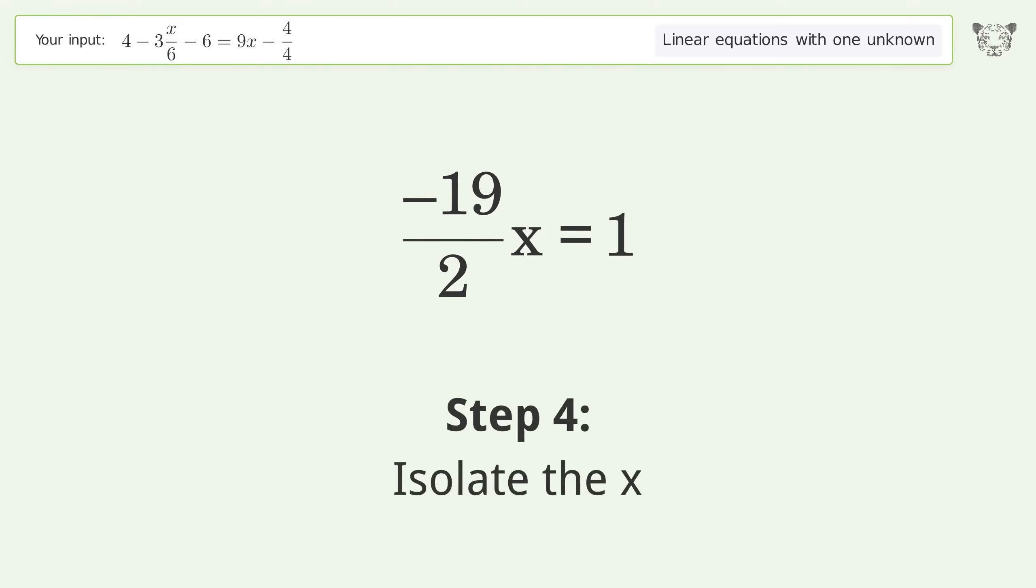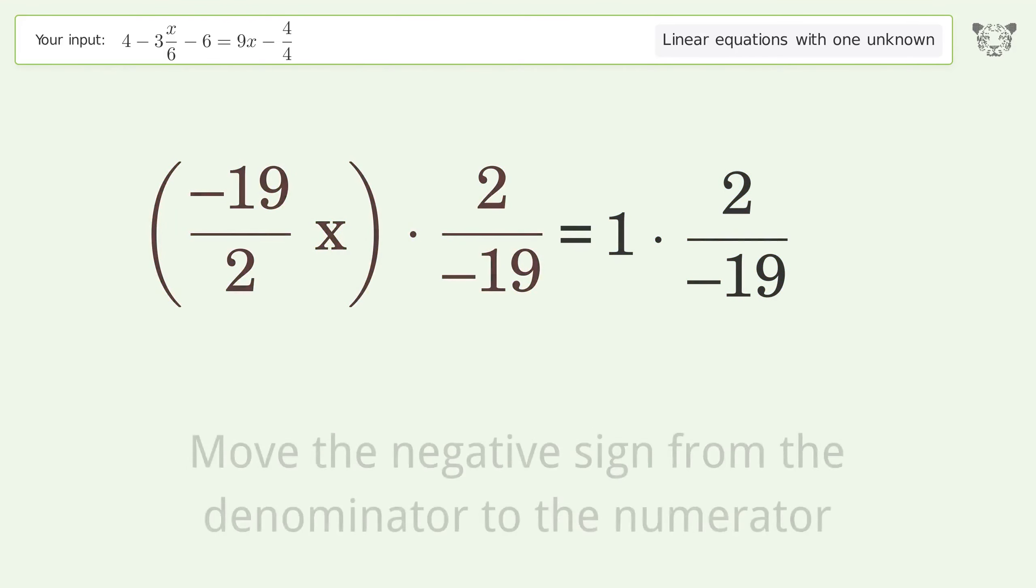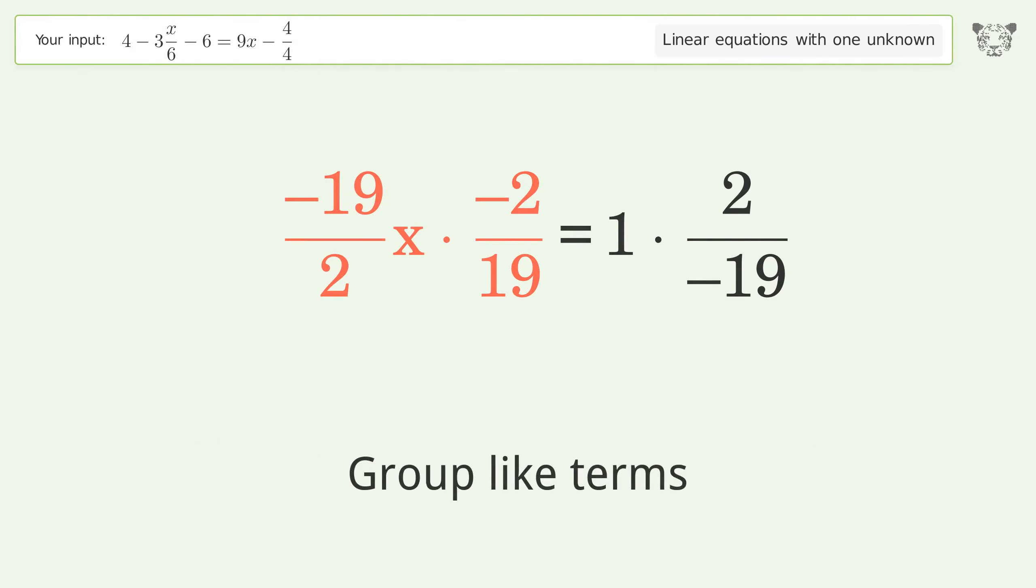Isolate the x. Multiply both sides by the inverse fraction 2 over negative 19. Move the negative sign from the denominator to the numerator. Group like terms.